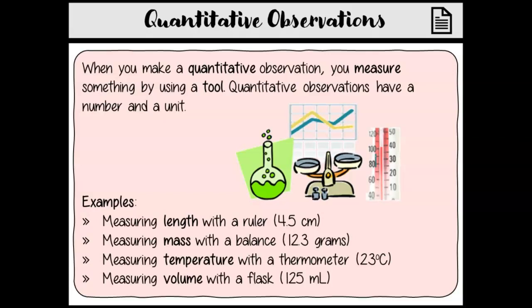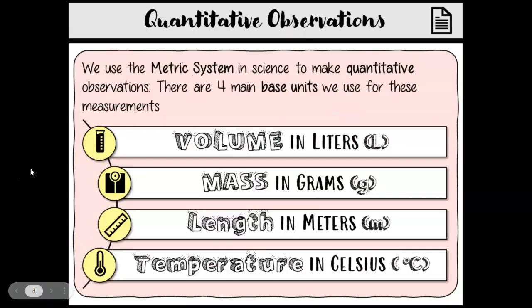Okay, so we use the metric system in order to obtain and also read quantitative observations. So we measure volume in liters, okay? So these are going to be the units, so the base units of these measurements: volume is in liters, mass is in grams, length is in meters, and then temperature will be in Celsius. Okay, so degrees Celsius. And we're going to talk on the next few slides about how we measure these things.